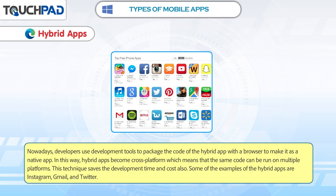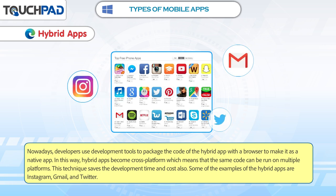Nowadays, developers use development tools to package the code of the hybrid app with a browser to make it a native app. In this way, hybrid apps become cross-platform, which means that the same code can be run on multiple platforms. This technique saves the development time and cost also. Some of the examples of hybrid apps are Instagram, Gmail and Twitter.